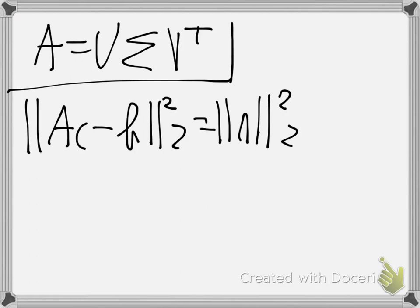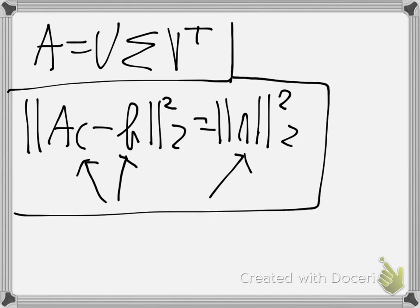You have some set of data B and you have to find some set of data C, but you will never get exactly the same set of data when you apply C to the matrix A. You will always get some remainder R. The goal is to make that remainder the smallest possible, so the length has to be minimal, and we can use least squares for that.